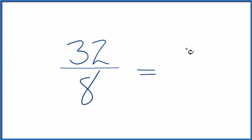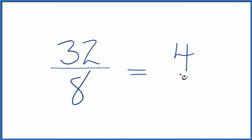32 divided by 8 is 4, because 4 times 8 is 32. 8 divided by 8, that's just 1. So we've simplified the fraction 32 over 8 down to 4 over 1.